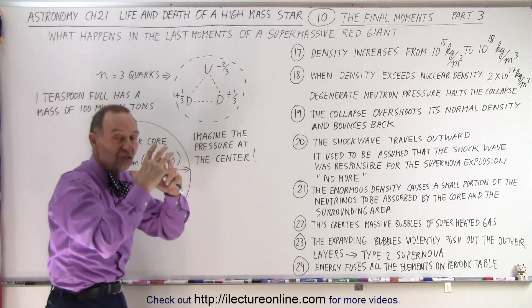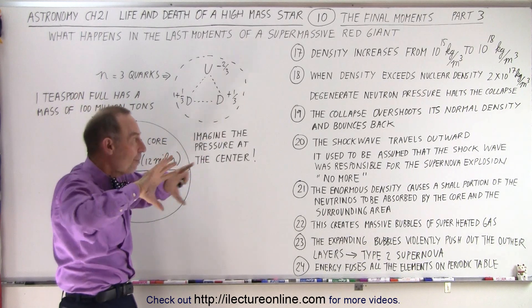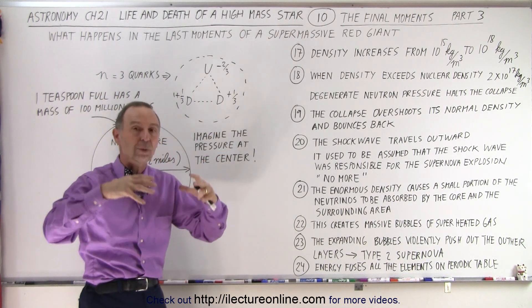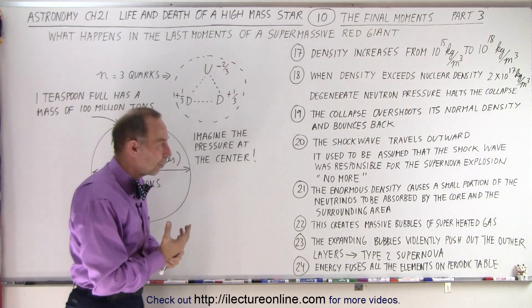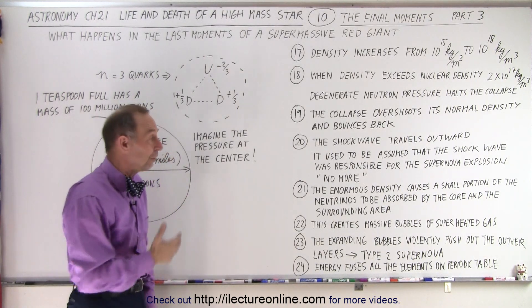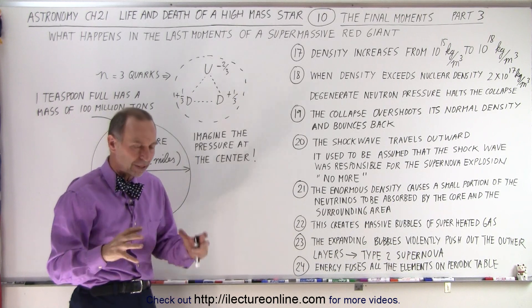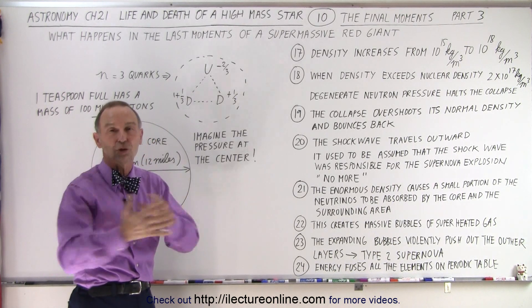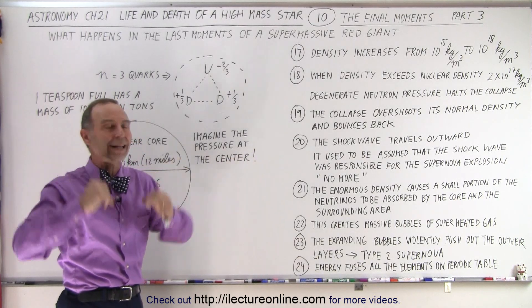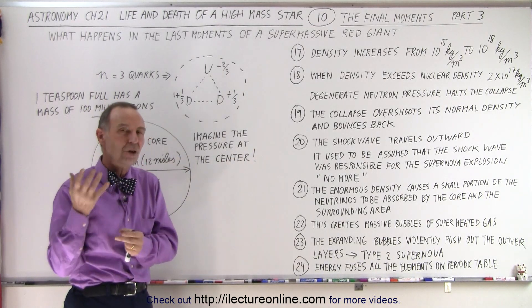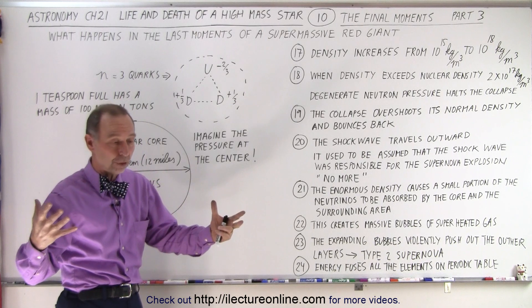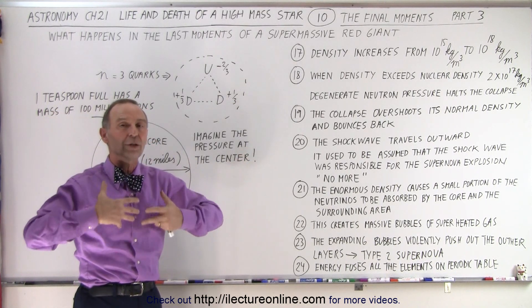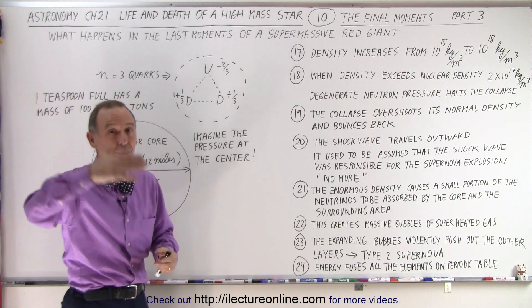And that's what we call the degenerate neutron pressure. The neutrons prevent any further collapse. But it overshoots the density. It starts shooting back, which sends a shock wave to the star back outwards. Now, we used to assume that this shock wave is what caused the type 2 supernova. But we don't think that's the case anymore because we calculate that that shock wave does not have enough energy to rip the star apart.